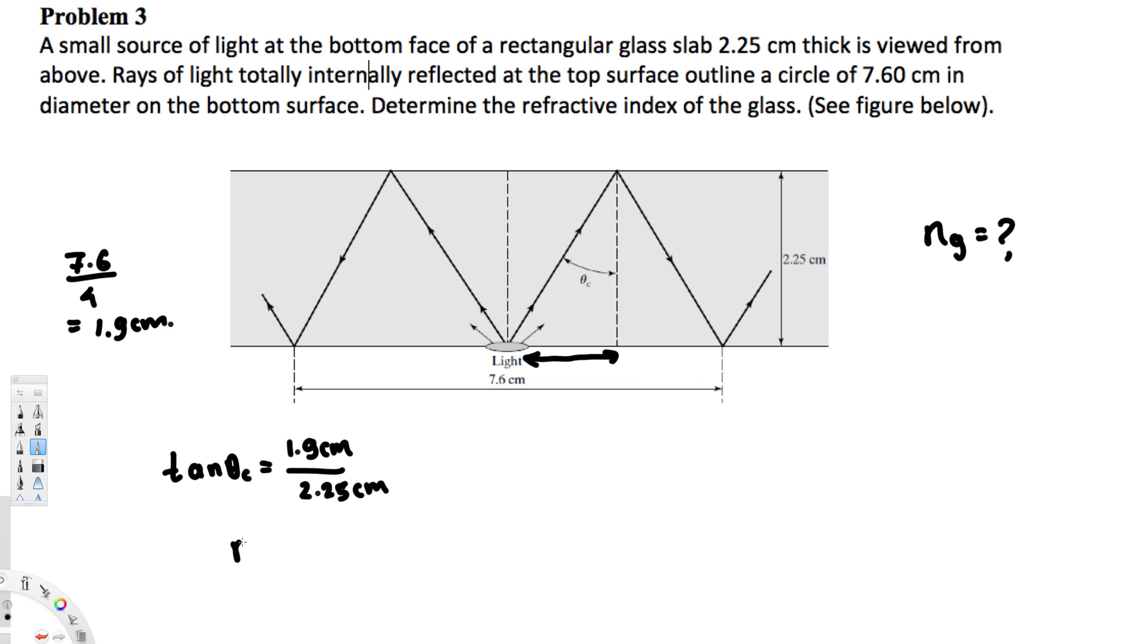Therefore, theta_c is going to be tan inverse of this value. And if you divide you should get 0.844, so tan inverse 0.844, and that's going to give us 40.179 degrees.